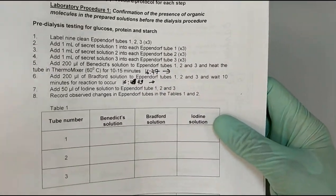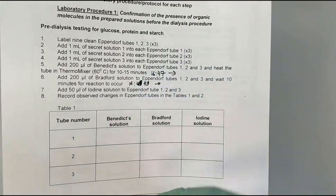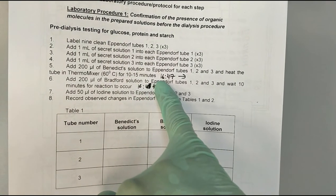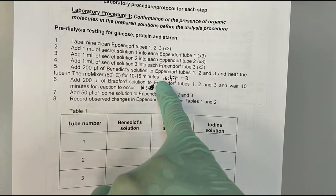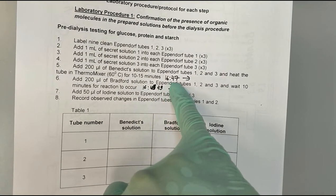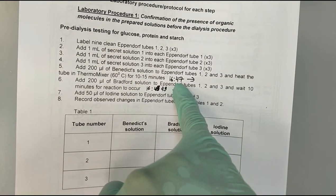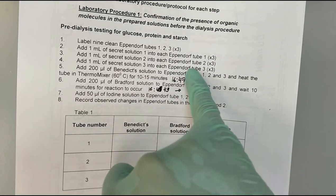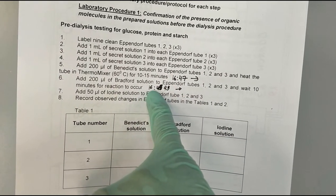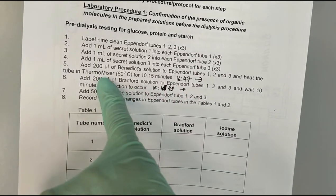Of course, because this is your protocol, you can write down anything that you want. For example, here you can see the written time for the addition of Benedict's solution. So it was 1647 when we added the solution, and it was 1643 when we added the Bradford.